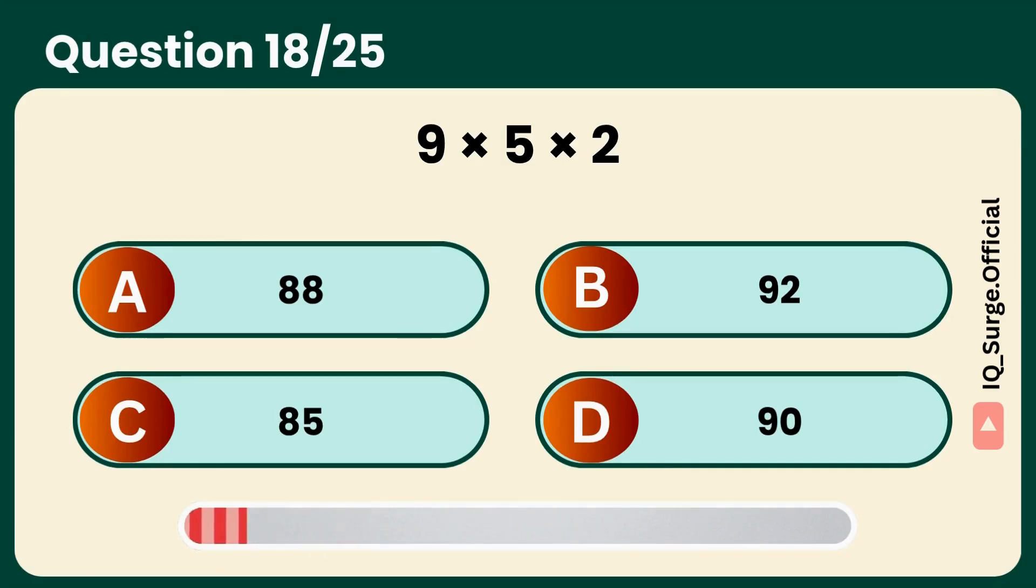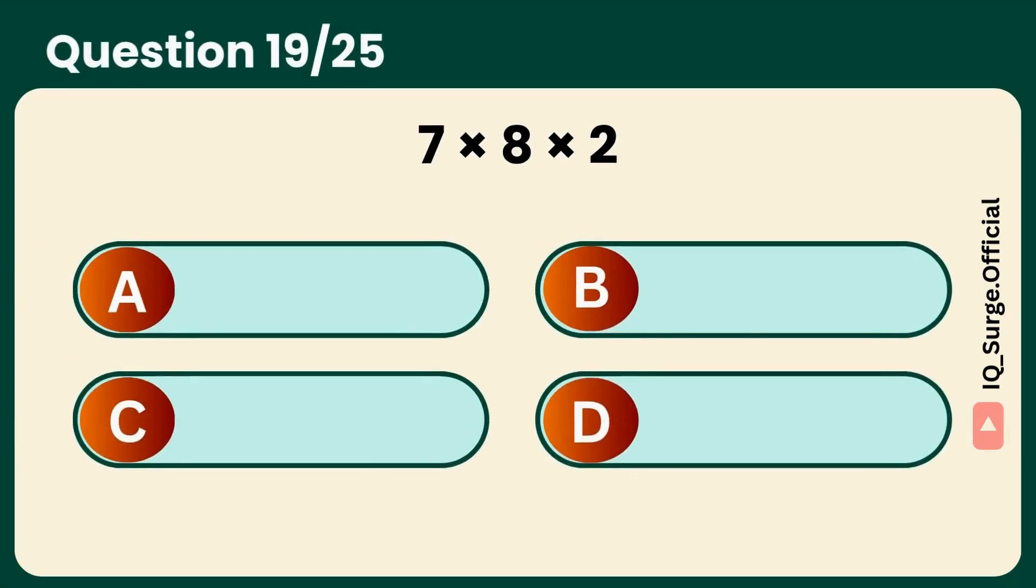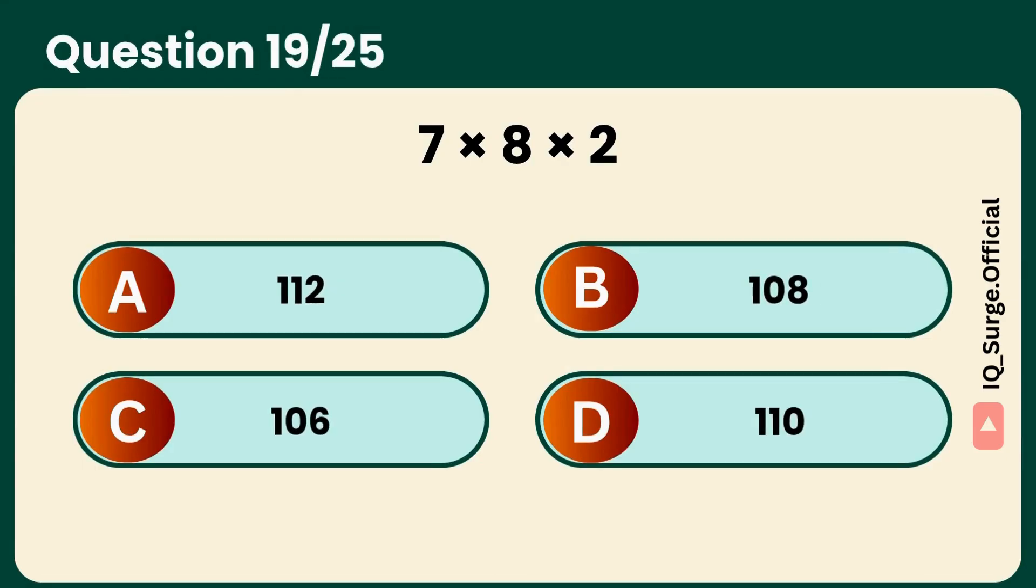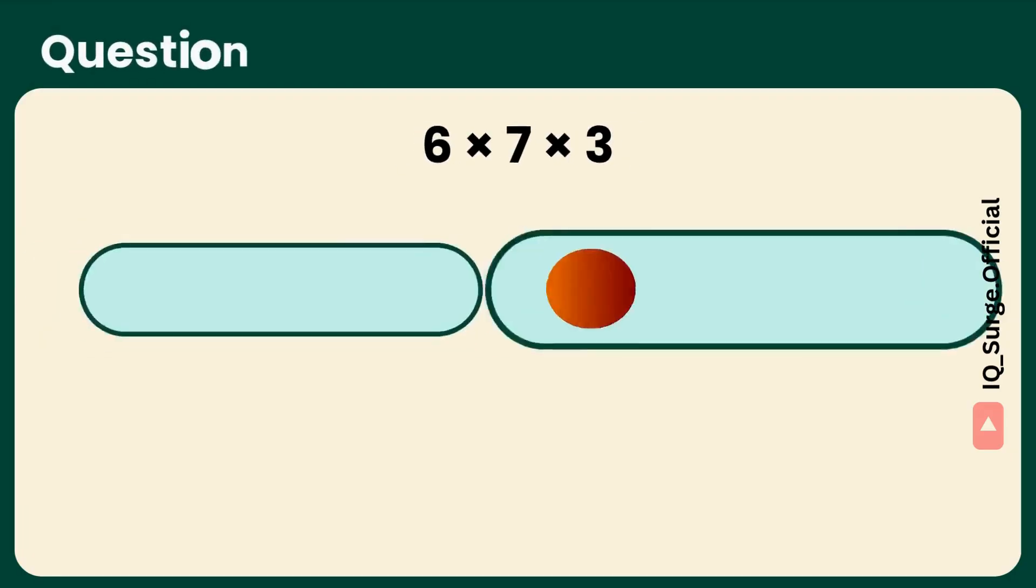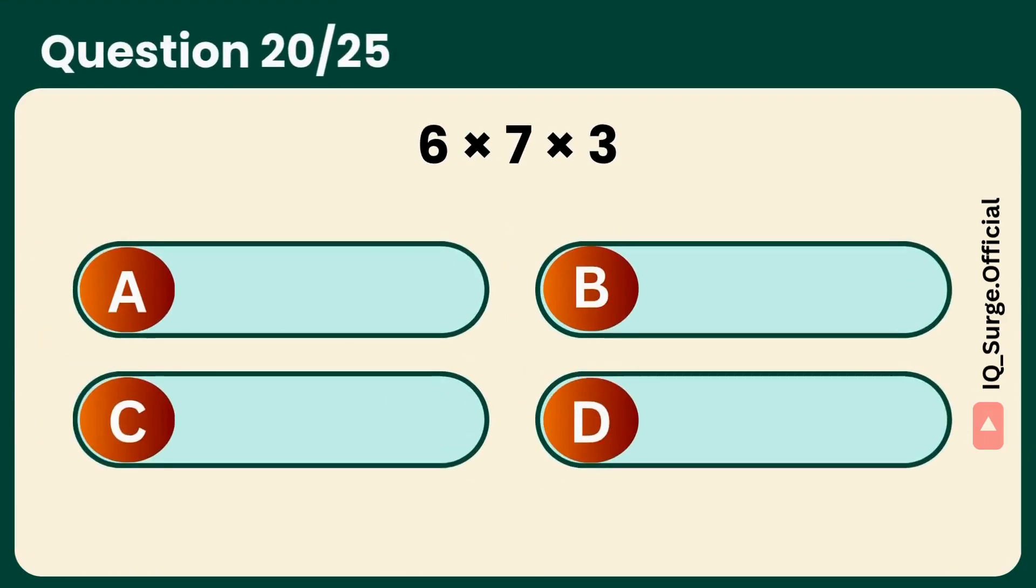Can you beat the clock? Answer: D, 90. What is 7 times 8 times 2? Double and multiply. Answer: A, 112. What is 6 times 7 times 3?